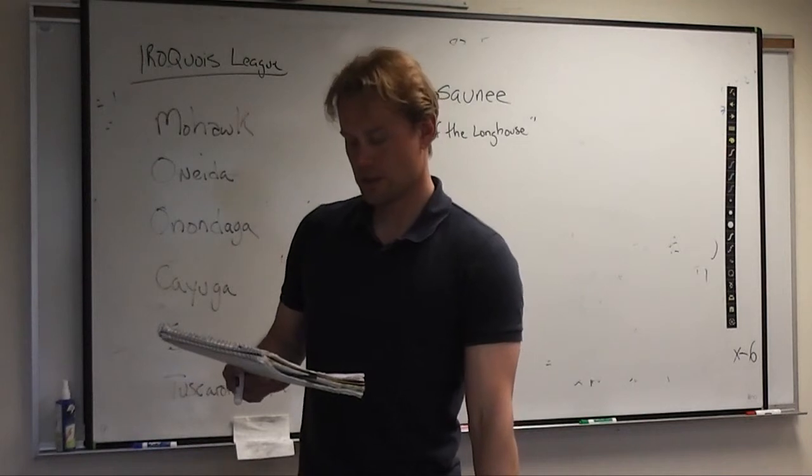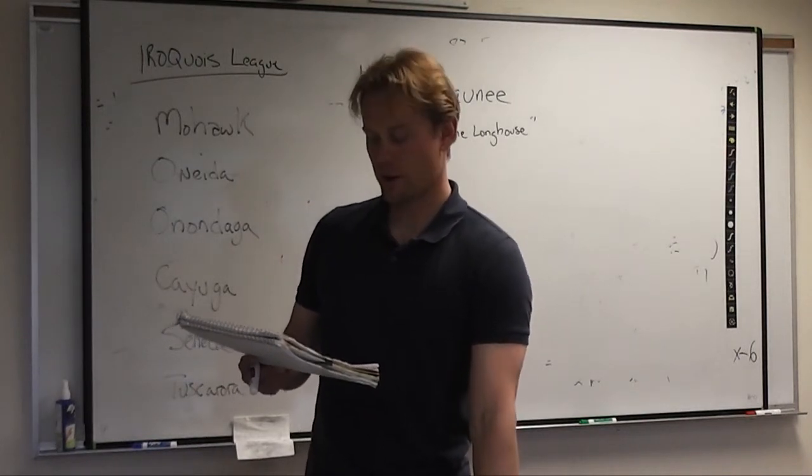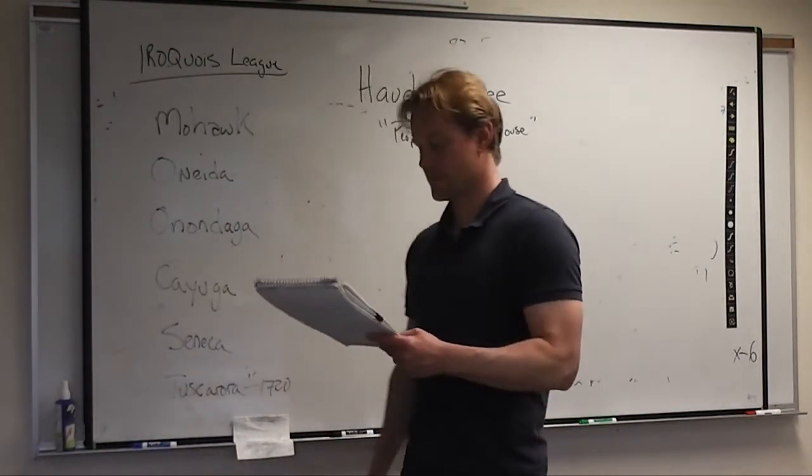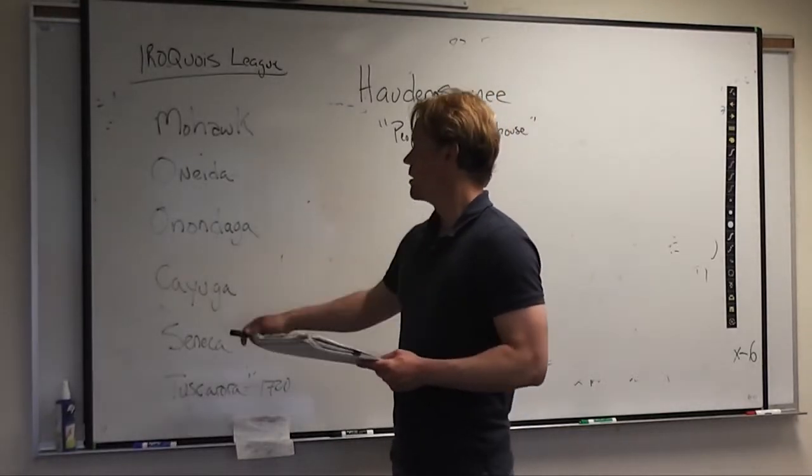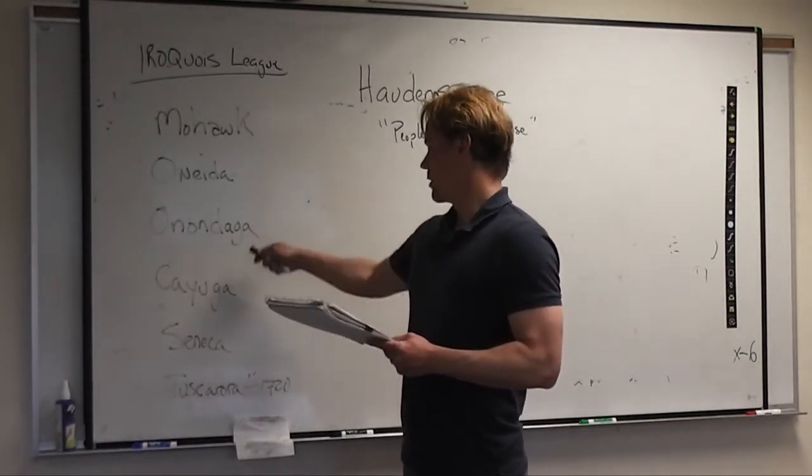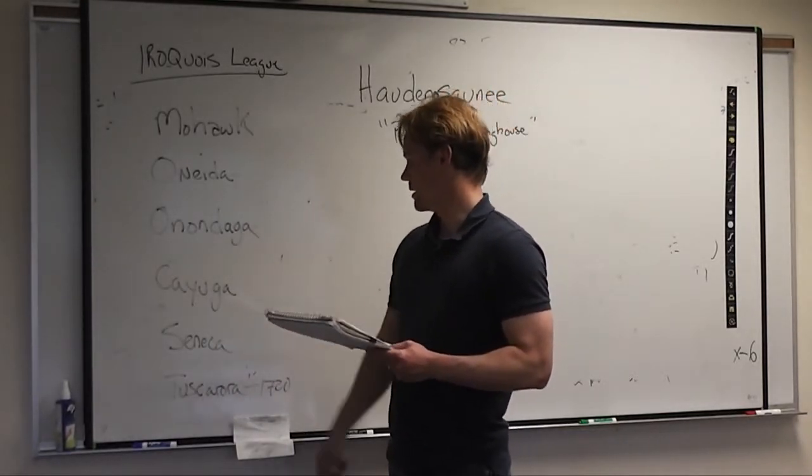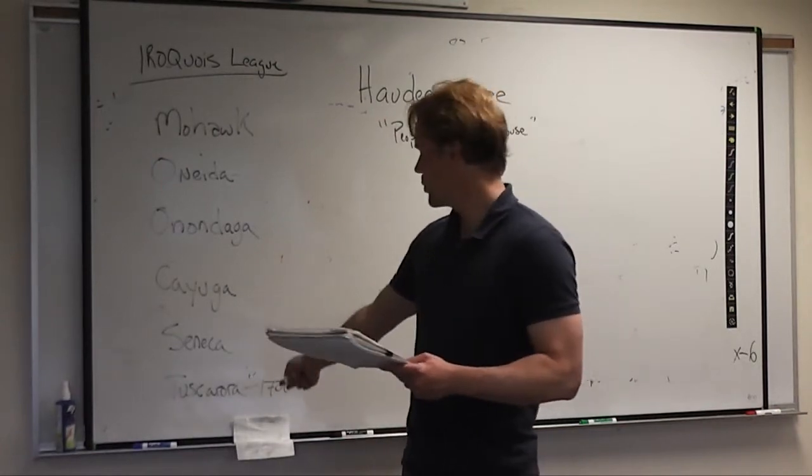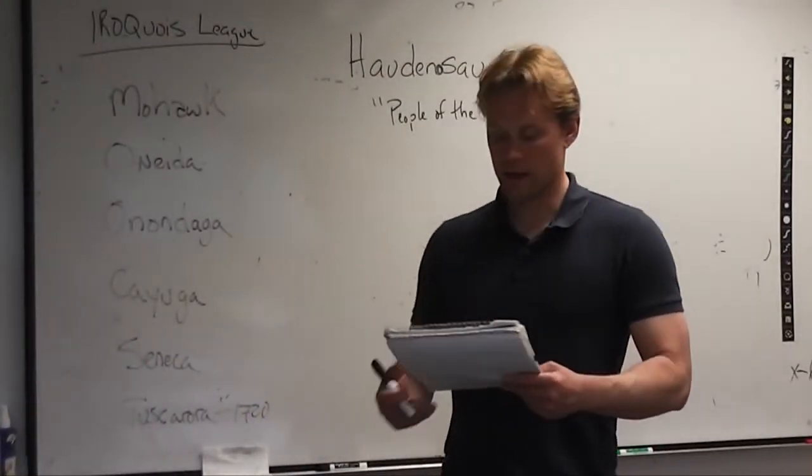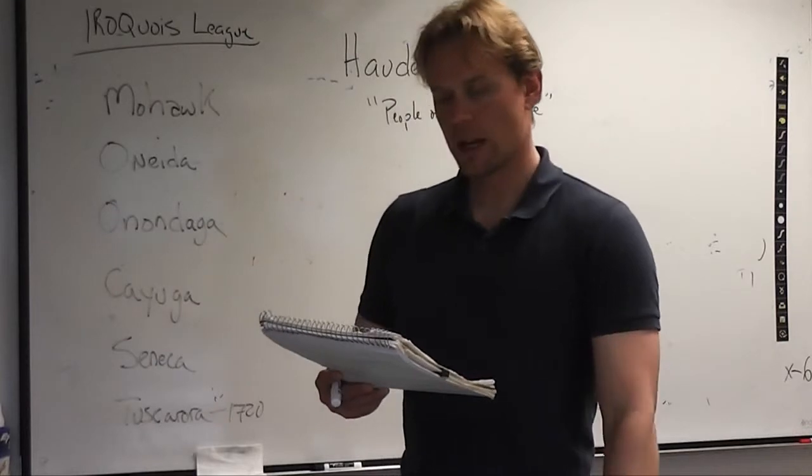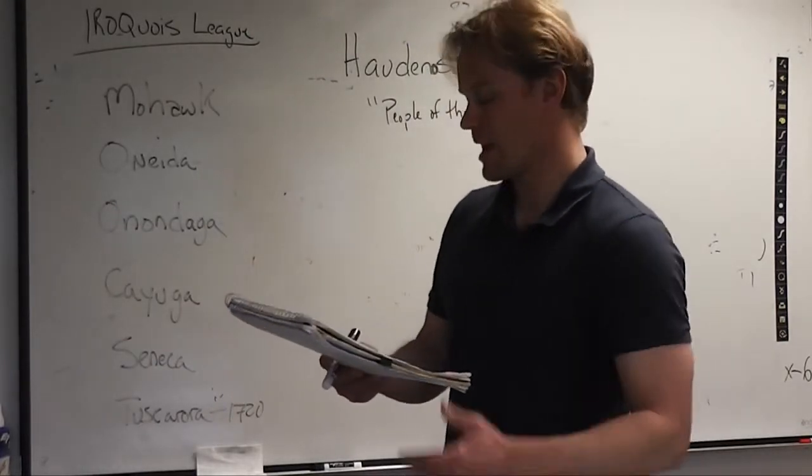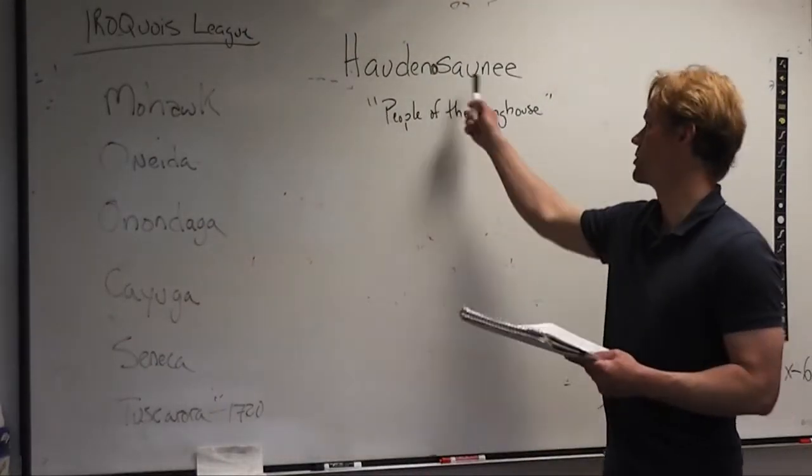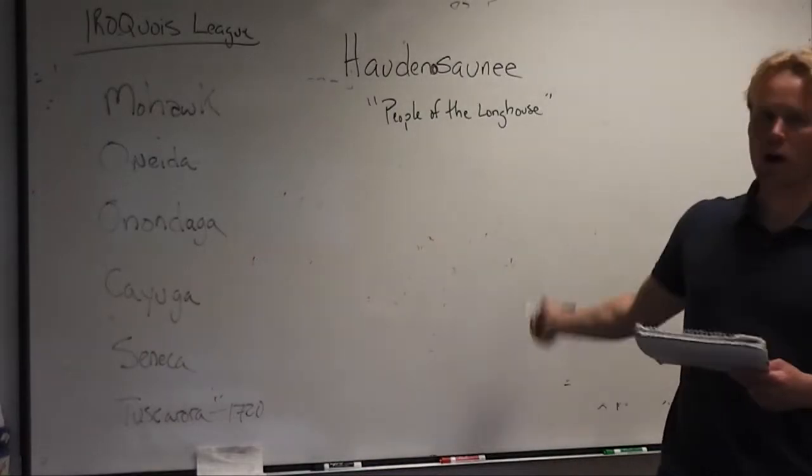The five nations or the league, the Iroquois league, in 1650, was composed of the Mohawk, the Oneida, the Onondaga, the Cayuga, and the Seneca nations. In 1720 though, the Tuscarora Indians joined the League. The Iroquois didn't refer to themselves as the Iroquois, they actually referred to themselves as the Haudenosaunee, which are the people of the longhouse.